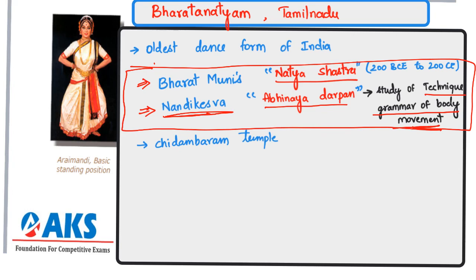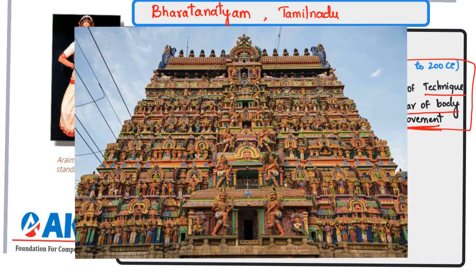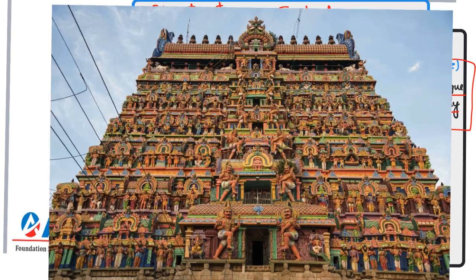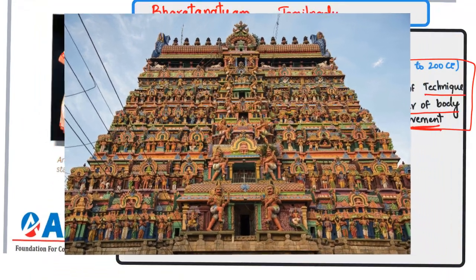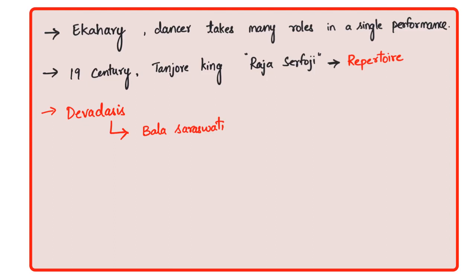Additional evidence comes from the Chitarabharat temple, whose wall carvings display all 108 karanas from the Natya Shastra — these postures form the foundation for Bharatanatyam. This dance form is also called Ekahariya, meaning one dancer takes many roles in a single performance — 'Eka' meaning one.